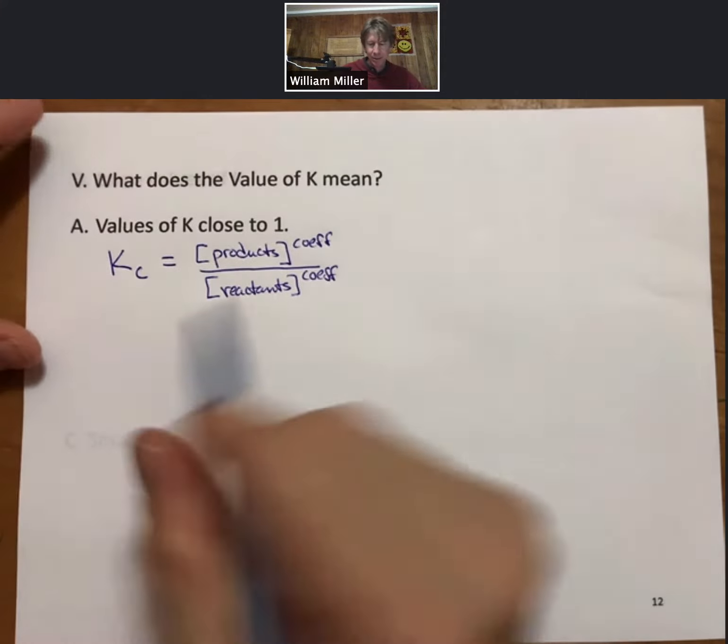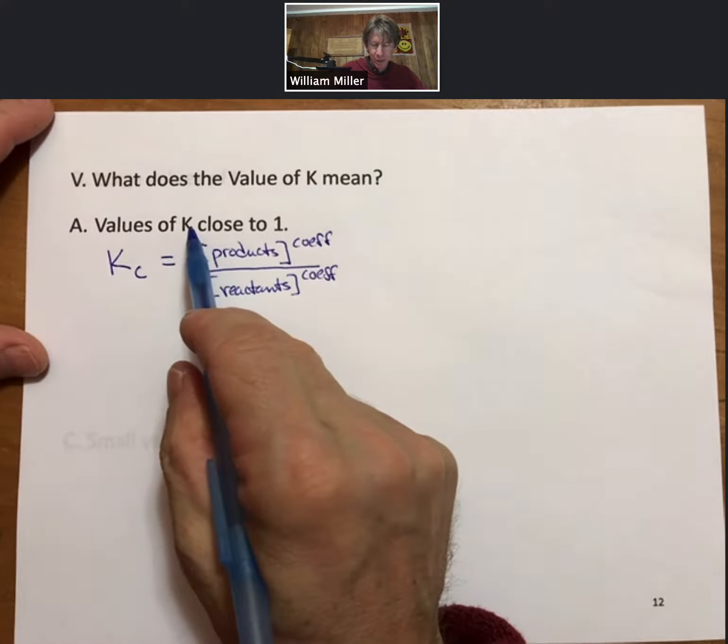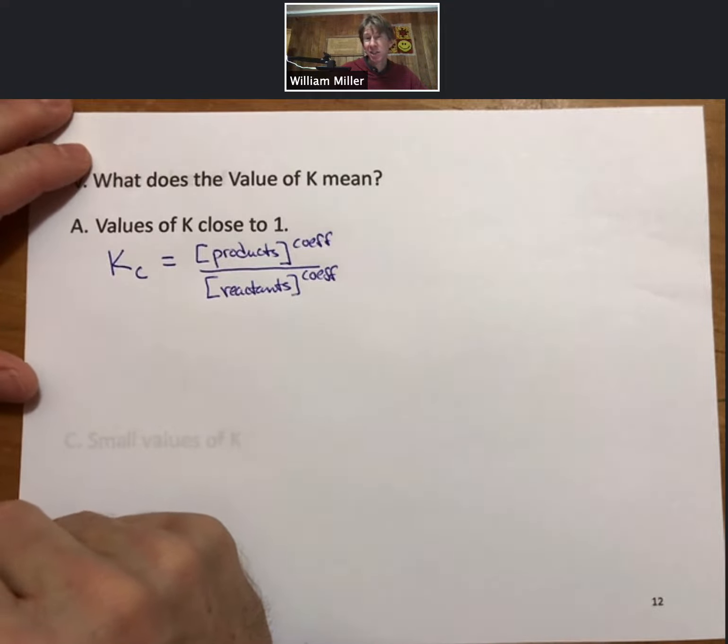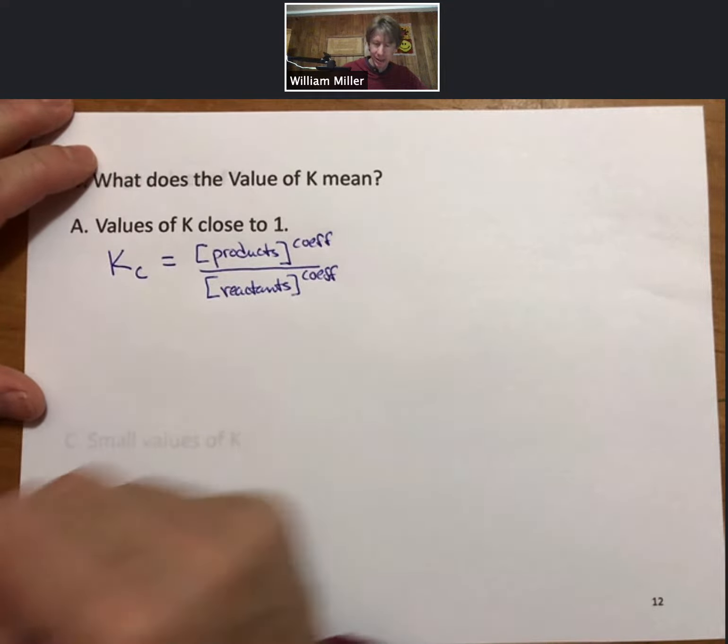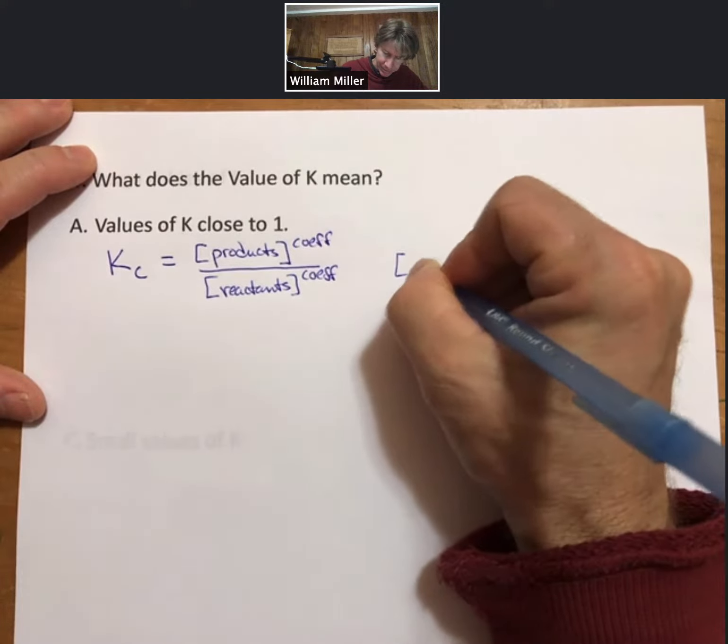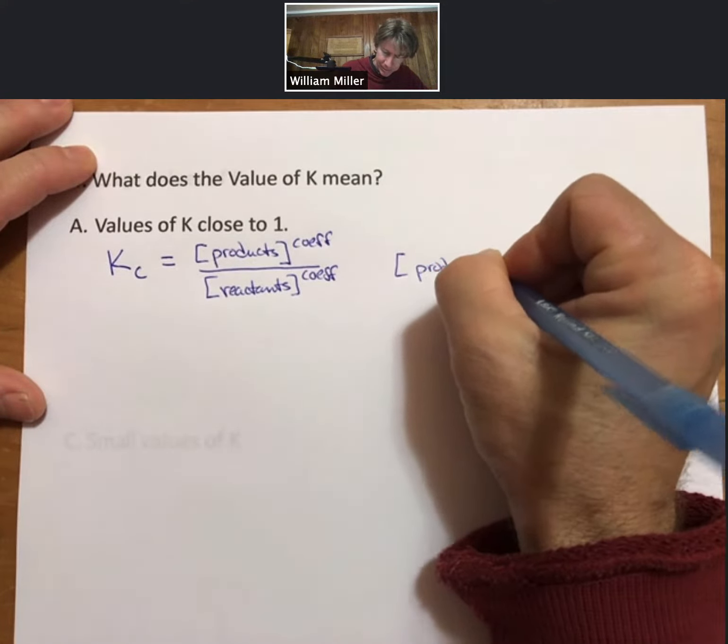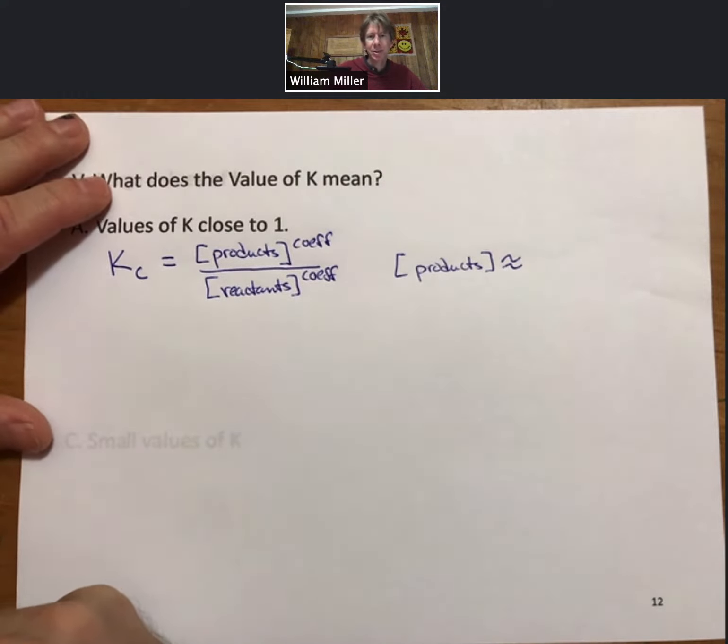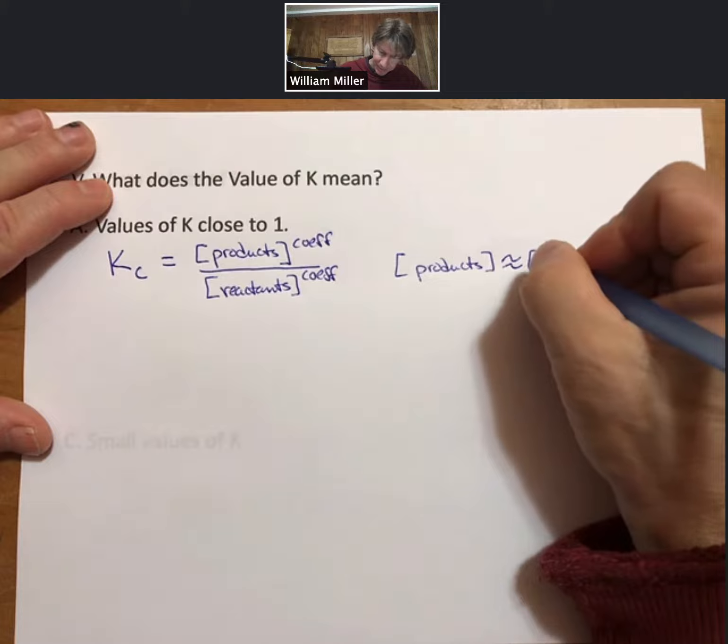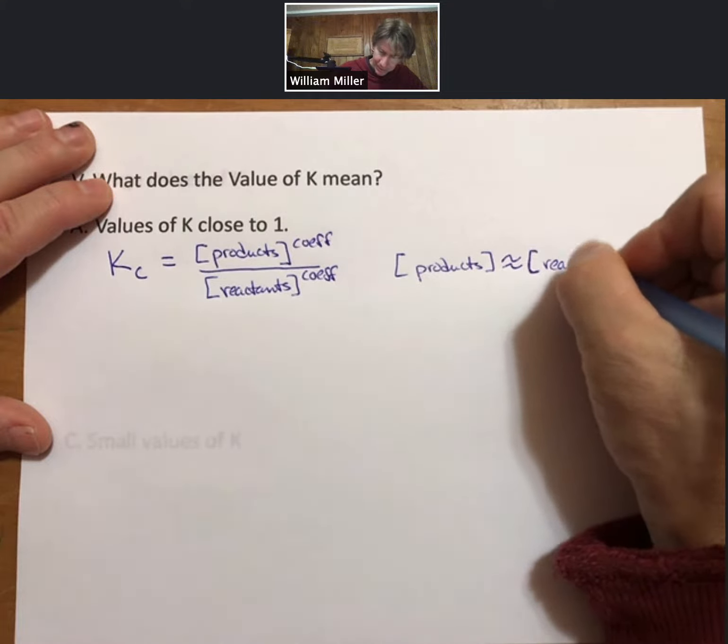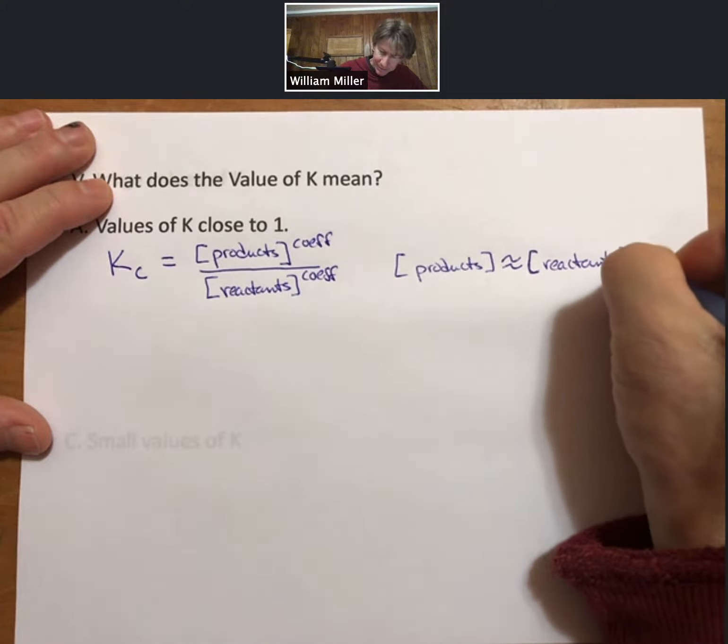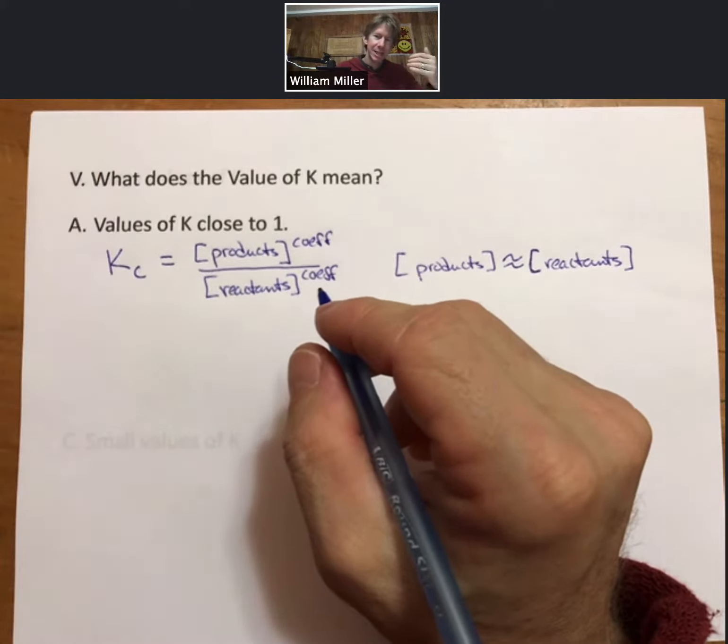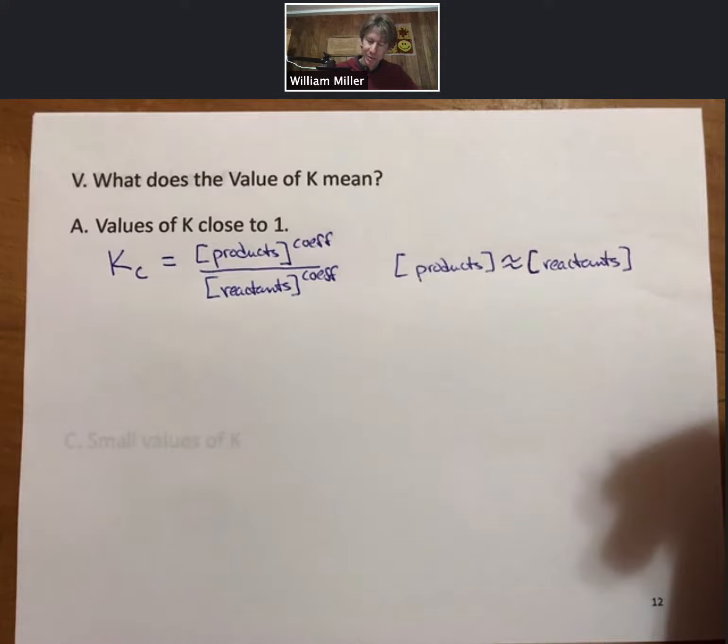If the value of K is close to one, what it means is that the concentration of the products is approximately equal to the concentration of reactants. We've seen examples of K values close to one before.